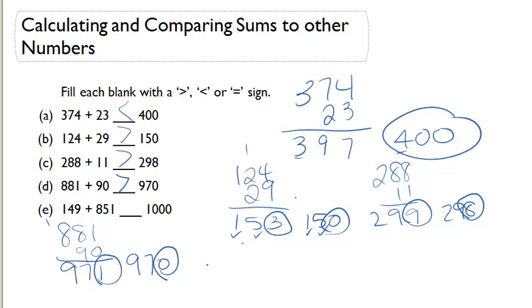And our last problem, 149 plus 851 gives us 9 plus 1 is 0, 1, 0, 1, 1000. A thousand is equal to a thousand. So our last answer is equal to.